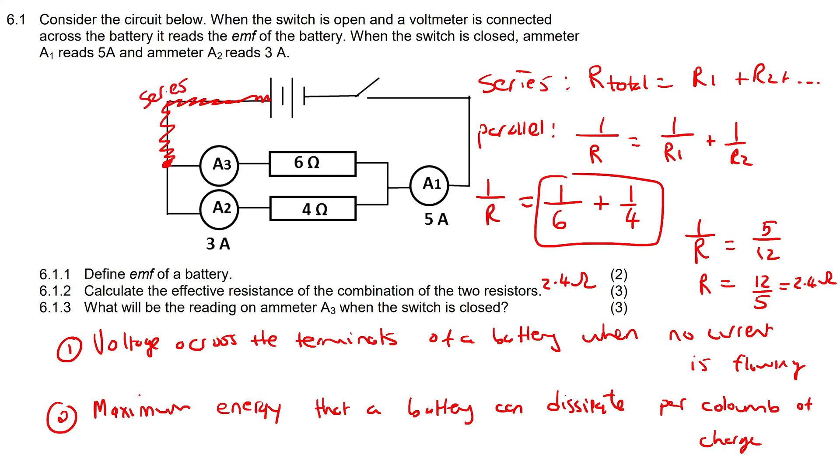And then what happens is that the electricity has to split. Some of it's going to go this way up to there, and then the other, the remainder, will go this way up to there, and then it will combine again to continue into that part of the circuit. So everything in red is the main series part of the circuit. So everything in red will be 5 amps, just like we see here: 5 amps.